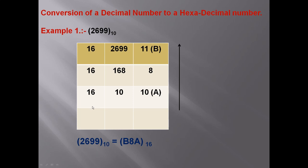In the first column we will write 16, 16, 16 because we are converting to hexadecimal. Then we will write the number 2699 and divide it by 16. The quotient is 168 and the remainder is 11. Then we divide 168, and the quotient is 10 with a remainder of 8.